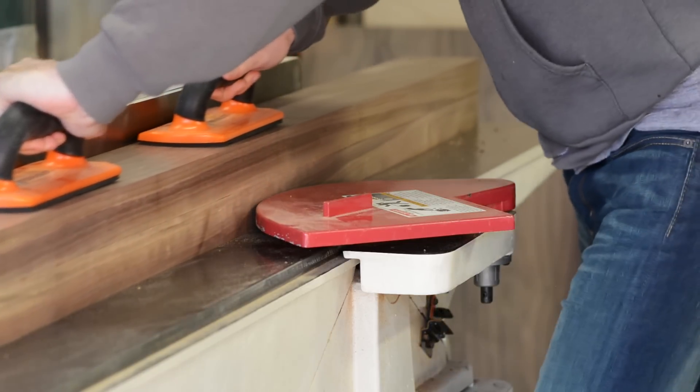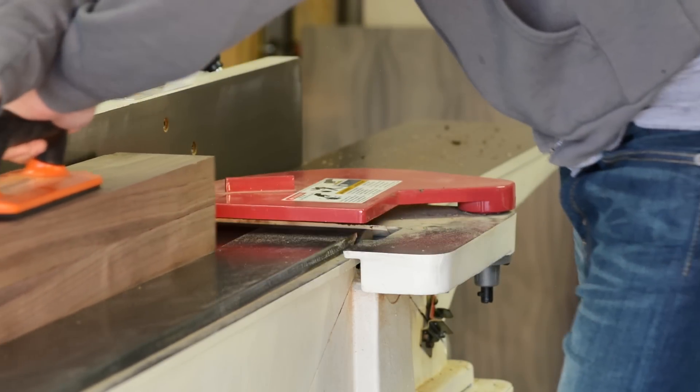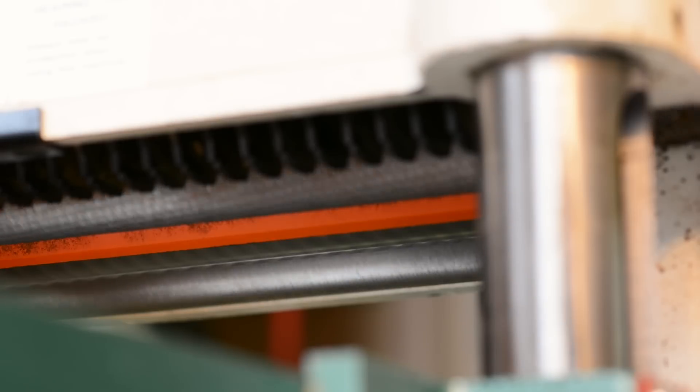Once everything was nice and dry, I went back and jointed and cleaned up one face and one of the edges to make sure that everything was nice and flush. Then I planed the remaining face and edge so that I had my 3.5 by 3.5 inch piece ready to go.